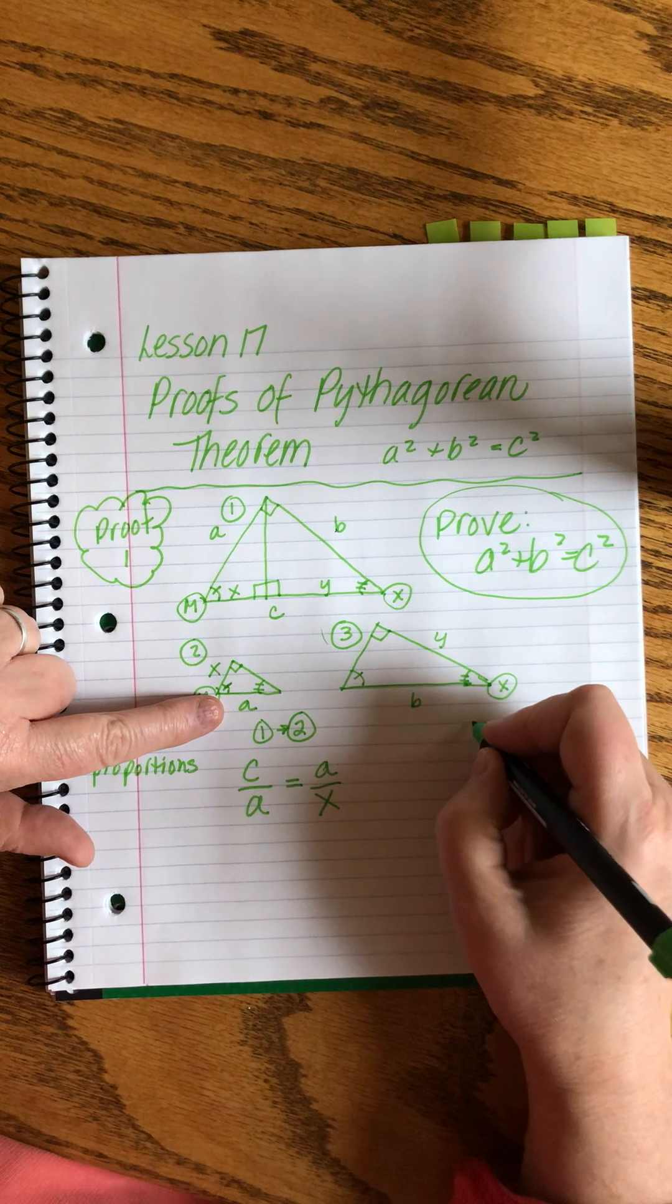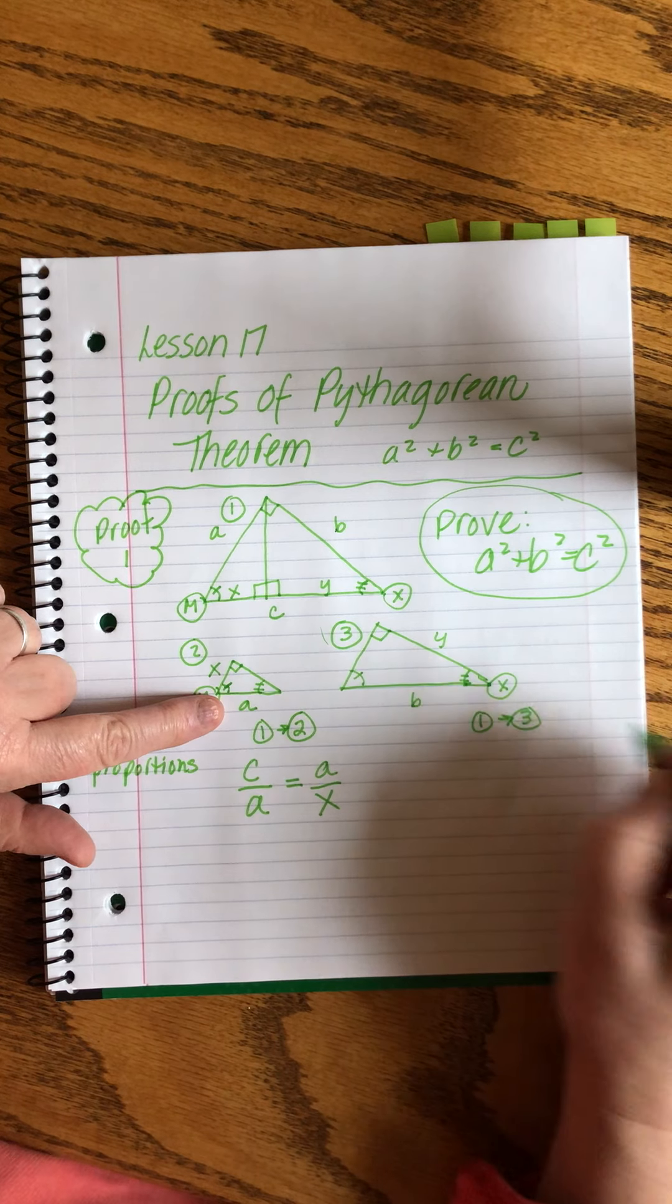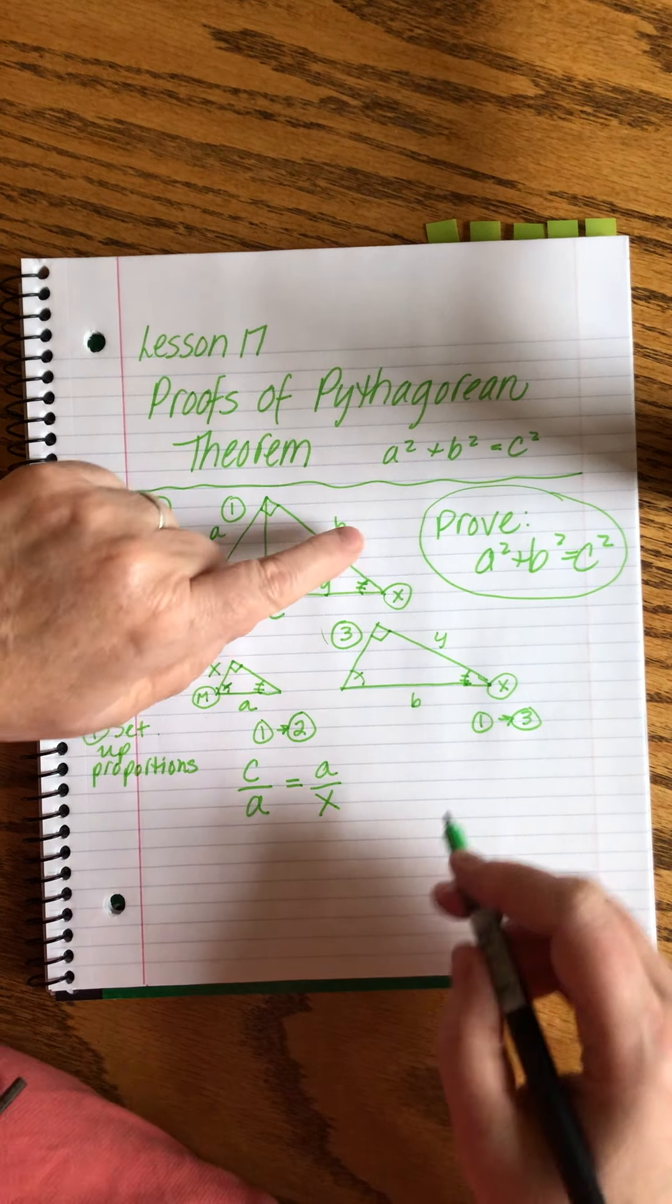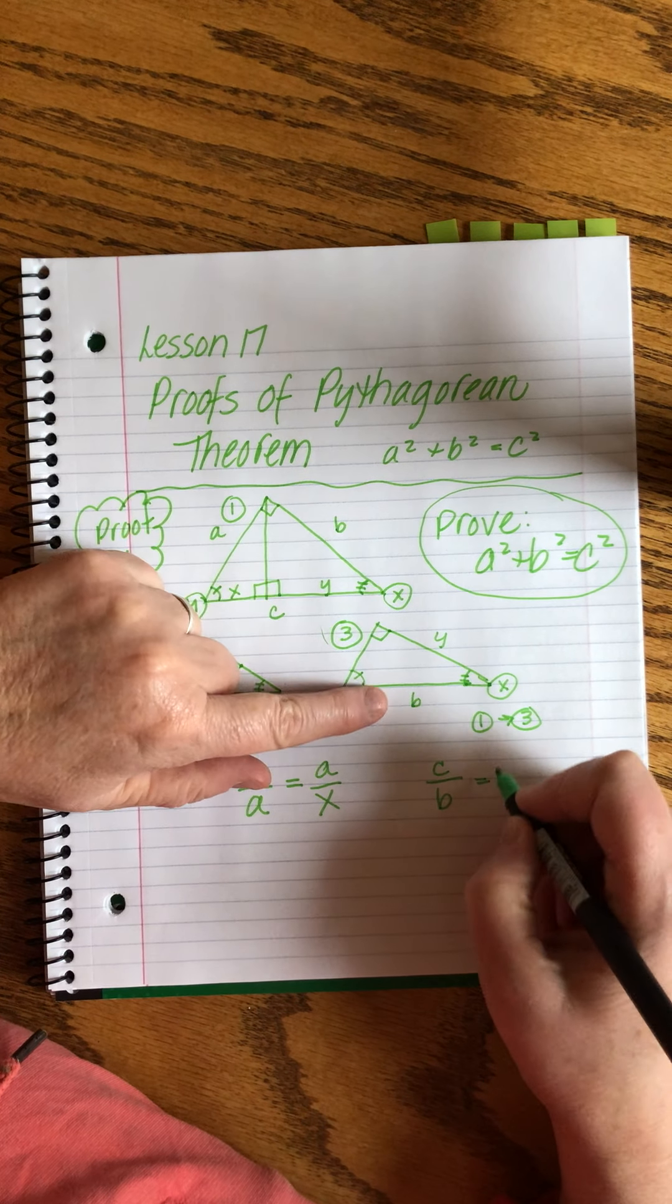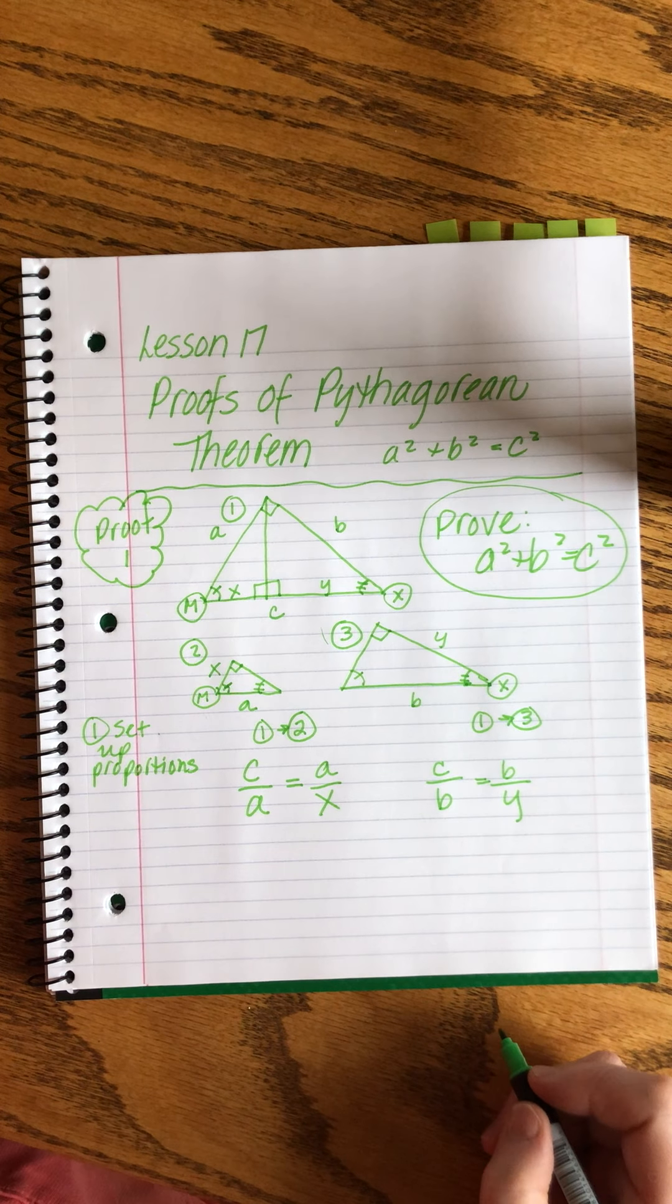Then I'm going to do the same thing over here. I'm going to set up a proportion between one and three. And that will be the hypotenuse over the long leg equals the hypotenuse over the long leg.